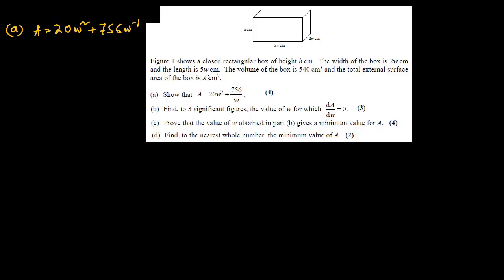The derivative is dA/dW = 20 × 2 = 40W. Then 756 × (−1) = −756, and the power decreases by 1, giving W to the power of minus 2. So dA/dW = 40W − 756W⁻².